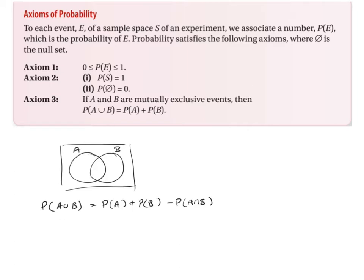If you look at A union B — remember, A union B is all of this here. The probability of A, shown in blue, and the probability of B, shown in red — you can see that we have counted the intersection twice, where we have the red and the blue overlap. So the probability of A union B is the probability of A plus the probability of B, but we have to take away the intersection because we've double counted it.